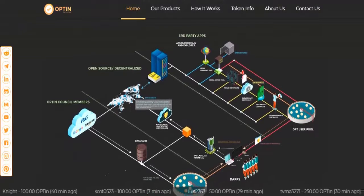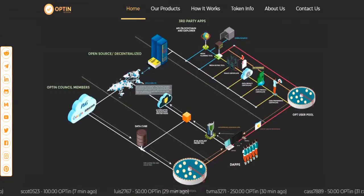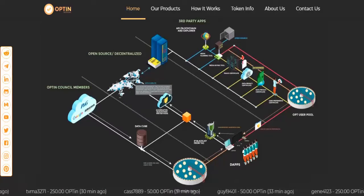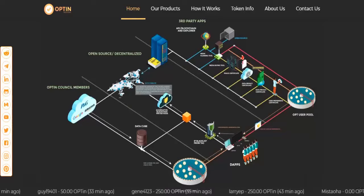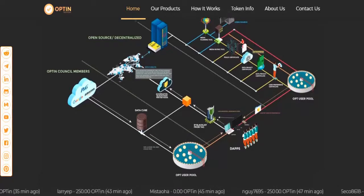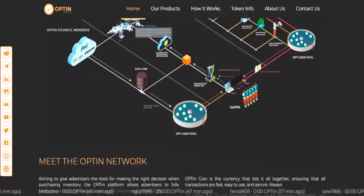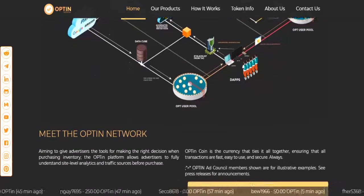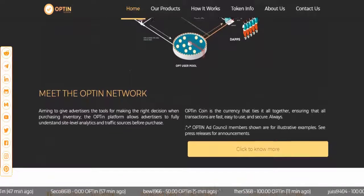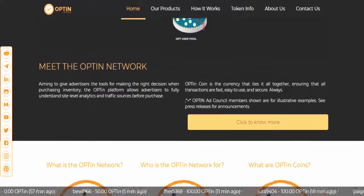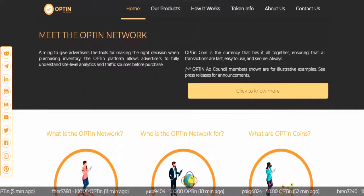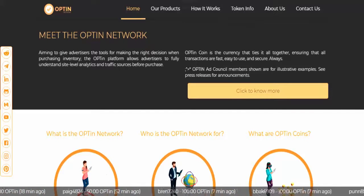Eighth, increased payment terms: advertising is purchased using OptIn tokens and distributed directly — 95 percent to publishers within hours of campaign delivery, limited only by network latency. Ninth, cost savings: by reducing the cost of DSP and CNS, advertisers predict savings of around 50 percent, corresponding to an economy of approximately 11.4 billion dollars.